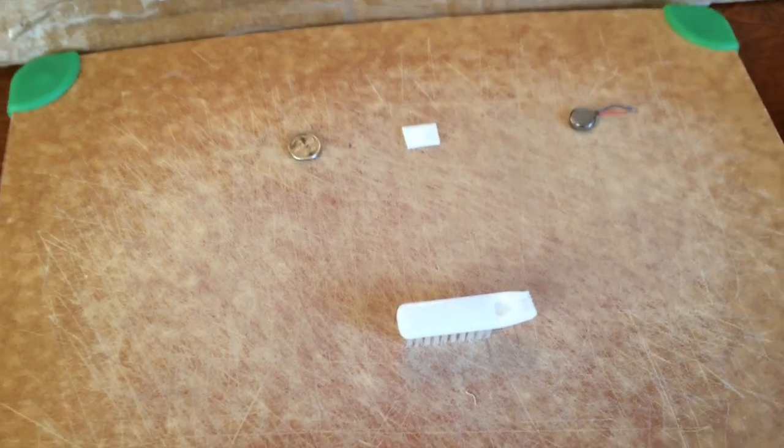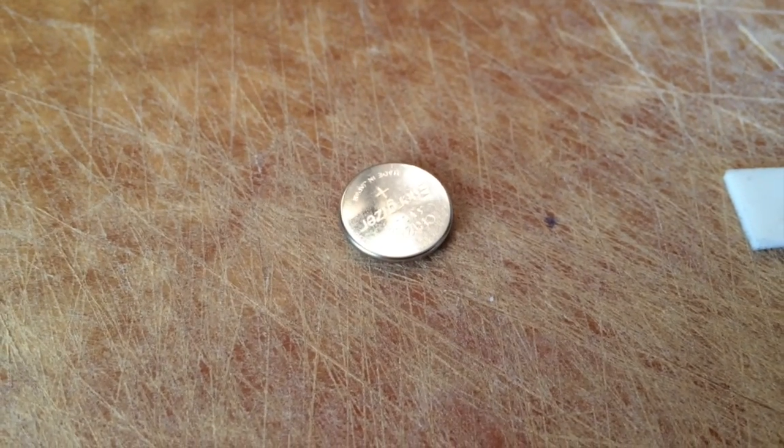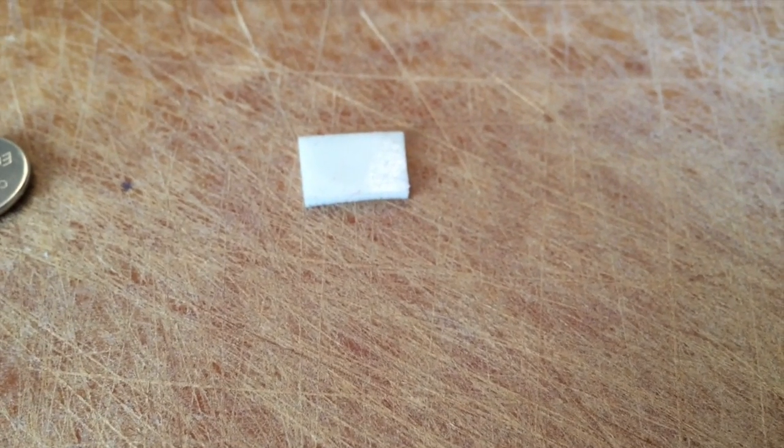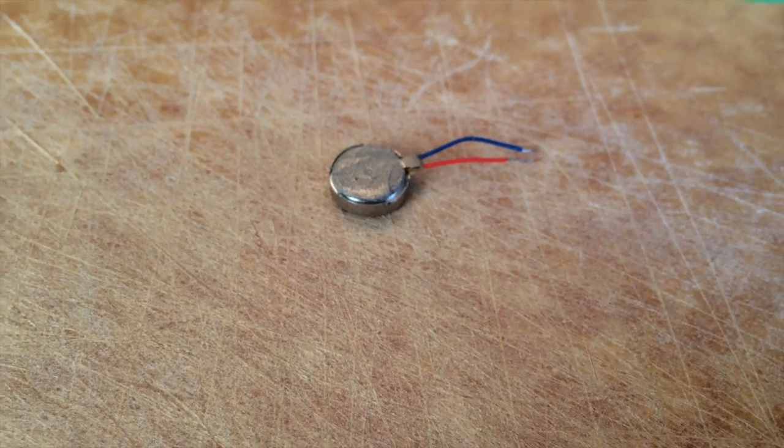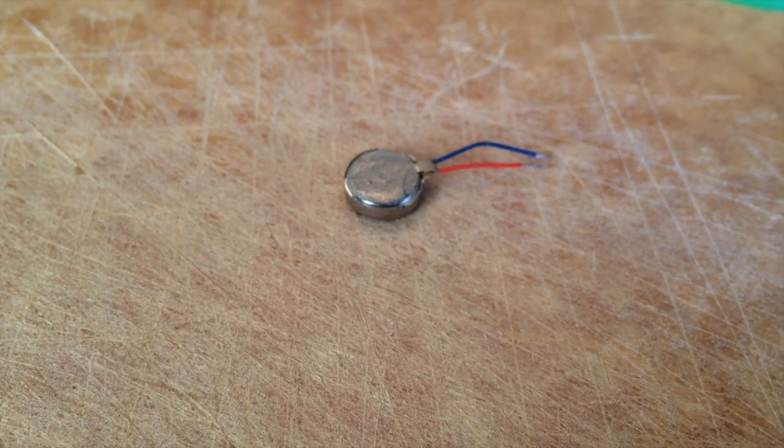So here's what you're gonna need. First grab any size 3 volt button battery, then a piece of double-sided sticky tape or scotch tape, and then grab a vibration motor, one from a cell phone works, and then a toothbrush.